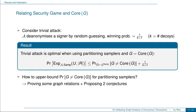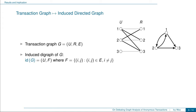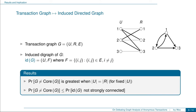We achieve this by proving some relations about graphs and proposing two conjectures. First, we map the problem of a transaction graph to that of a directed graph. Given the transaction graph G, we define the induced directed graph ID(G), which has the same edges as G but reinterpreted as directed edges with self-edges removed. Based on results in the graph theory literature, we prove that the probability of G not equaling core(G) is greatest when the number of users equals the number of rings, and this probability is upper bounded by the probability that the induced directed graph of G is not strongly connected. Therefore, our problem becomes to upper bound the probability that the induced directed graph is not strongly connected.